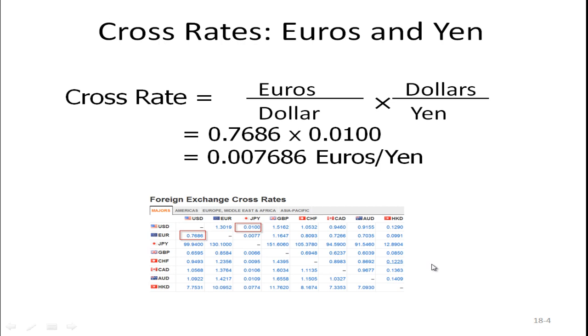And I've recreated that table here. What would you do? You take the euros per dollar multiplied by the dollars per yen. So the euros per dollar is 0.7686 euros to buy one dollar, and it's 0.0100 dollars to buy one yen. So if you multiply those together, you get 0.007686 euros per yen.